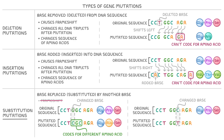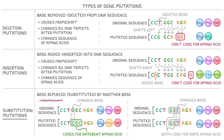But if we instead mutated this cytosine into a thymine, something interesting happens. Because of the degenerate nature of the genetic code, GGC and GGT actually both code for the same amino acid — proline — so this mutation ends up having no effect on the amino acid sequence. In reality, this is actually quite common, as many amino acids are coded for by multiple different DNA triplets.